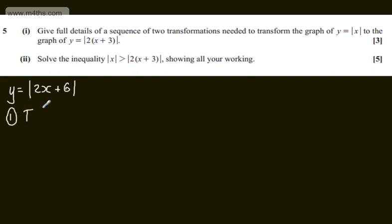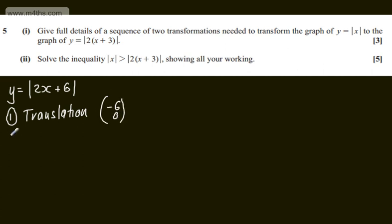We do the translation first. The first transformation is a translation of six units in the negative x direction. As a vector, we write this as (-6, 0), so six units in the negative x direction, parallel to the x axis.